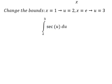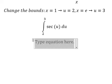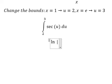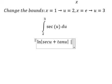So the integration of this one, we have ln of the absolute value of secant of u plus tan u, and we put the bounds from number two to number three.